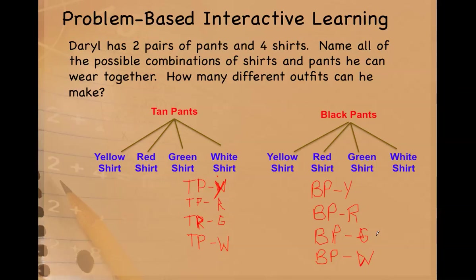Another way to do this, a third way, would be to multiply the parts of the combination. So if you have two pairs of pants and four shirts, you can multiply two times four to get the total number of combinations, which is eight. So how many different outfits can I make? You can make eight.